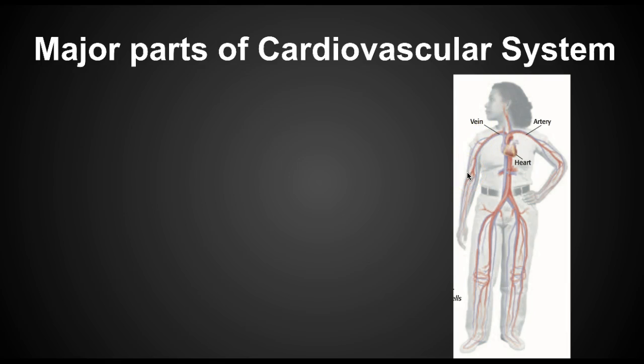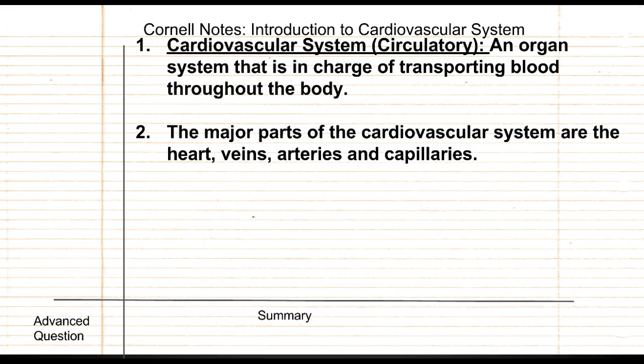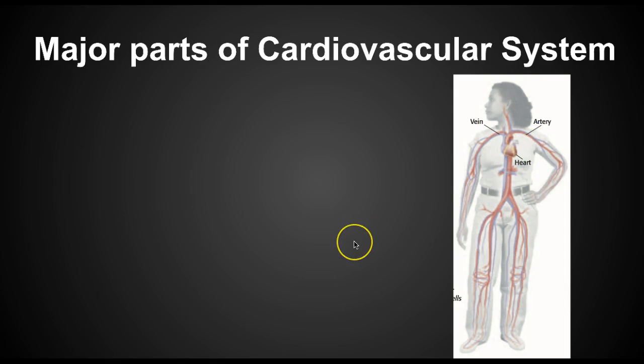And the capillaries are even much smaller. We'll talk about all these pieces in detail again, but for now just know that the arteries, veins, and heart are the main parts of the cardiovascular system. Go ahead and come up with a question for number two and then let's move on to three.